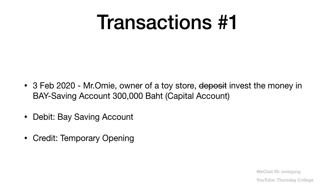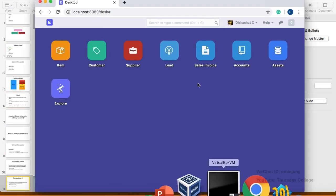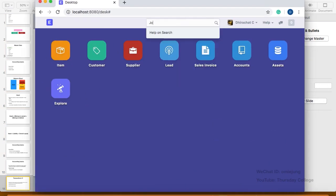Let's start with transaction number one. On the 3rd of February, Mr. Omi, the owner of the toy store, deposits — or we can say invests — money into the business. Depositing means putting money into the bank account, but in this context we call it investing because he is putting the money into the company. We put 300,000 baht into the base saving account.